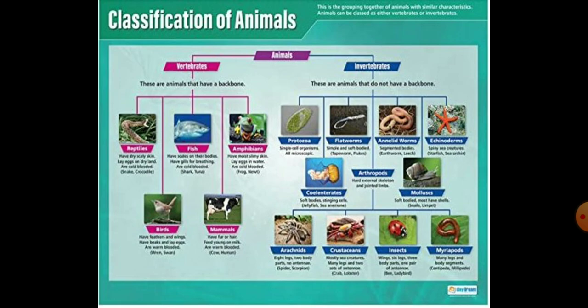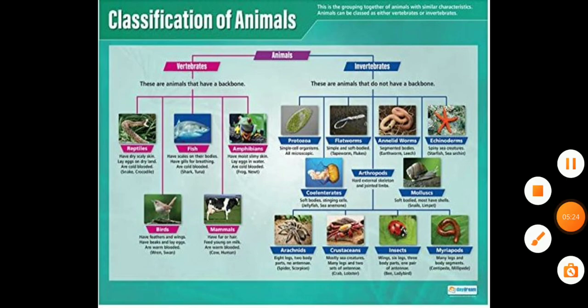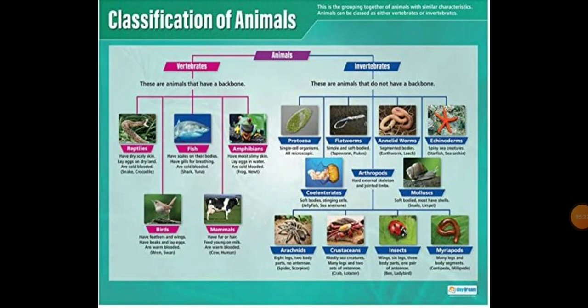Coming to the classification of animals in general, these characters will be studied in detail in upcoming classes. This semester you will study invertebrates. Animals are classified into two types: vertebrates and invertebrates. Vertebrates include fish, amphibians, reptiles, birds, and mammals. Invertebrates include protozoans, flatworms, annelids, echinoderms, arthropods, and mollusks.